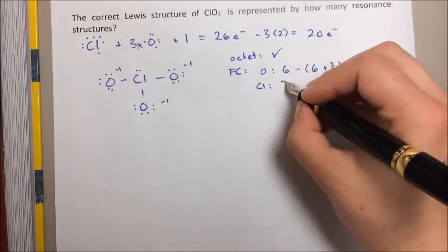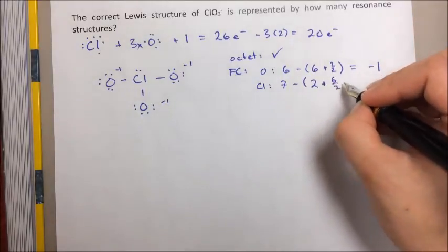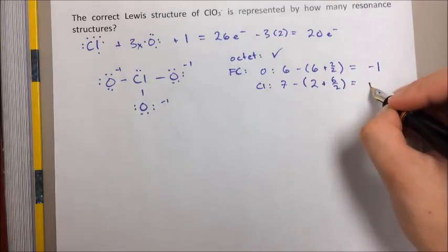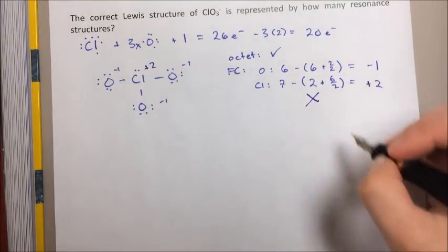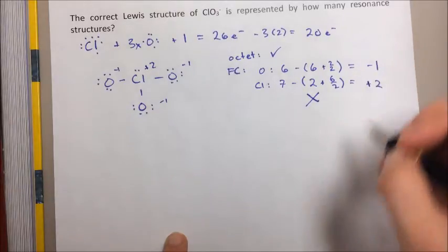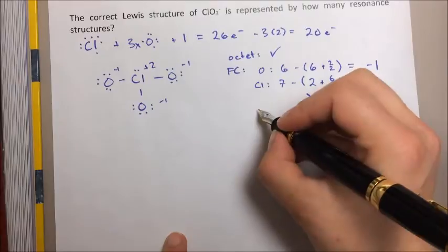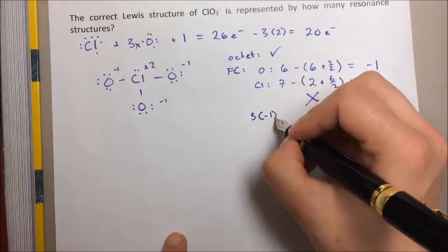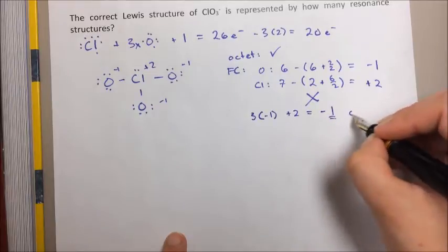And the chlorine is going to be 7 minus 2 plus 6 over 2, and that's a plus two formal charge. These formal charges are pretty high, so this does not pass, even though they do add up to the overall minus one charge of the ion. It's going to be 3 times minus 1 plus 2. Yeah, that's minus one, which is exactly what the charge should be.